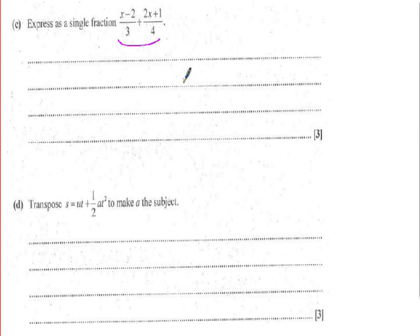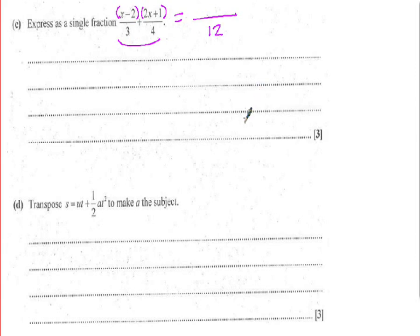Question one part c is an algebraic fraction problem. You need to understand basic fractions — finding a common denominator — and bring the fractions together. It sometimes helps to put brackets around the numerator and denominator when building the common denominator. The common denominator will be 12 — the lowest common denominator — and there are three marks for that.